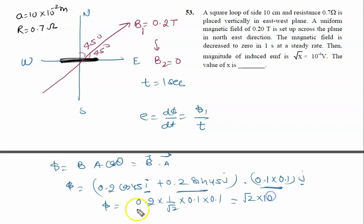This gives 10⁻³, so the flux is √2 × 10⁻³. Time is one second, so the final answer is √2 × 10⁻³ volts.